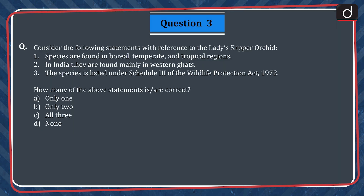Question 3. Consider the following statements with reference to the lady's slipper orchid. 1. Species are found in boreal, temperate and tropical regions. 2. In India, they are found mainly in the Western Ghats. 3. The species is listed under Schedule 3 of the Wildlife Protection Act 1972. How many of the above statements is or are correct?